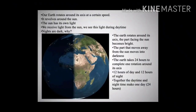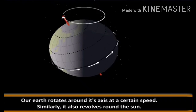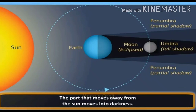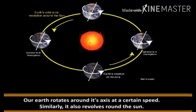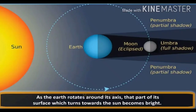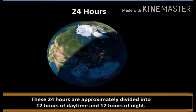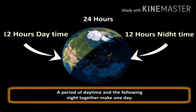Our earth rotates around its axis at a certain speed, and it also revolves around the sun. The sun has its own light and we receive light from the sun, but we see light only in the daytime. Nights are darker. That part of the earth's surface which turns towards the sun becomes bright, and that part that moves away from the sun is in darkness. The earth takes 24 hours to complete one rotation around its axis. 24 hours approximately divide into 12 hours of daytime and 12 hours of night. A period of daytime and the following night together make one day.